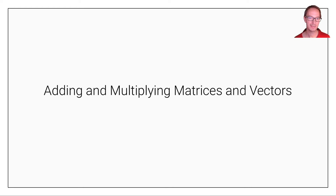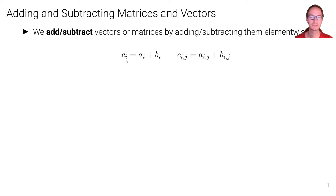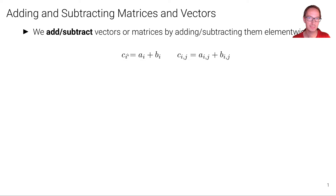In this unit we will see how we can add and multiply matrices and vectors. We add or subtract vectors or matrices by adding or subtracting them element-wise. Here on the left we can see an example for a vector where the input vectors A and B are element-wise summed to yield each element C, where I is the index of the element. So for example we add the first element of vector A to the first element of vector B and we get the first element of vector C.